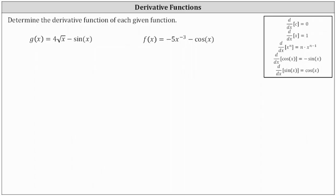To begin, we need to write the square root of x using a rational exponent. For a square root, the index is 2 and the exponent on x is 1. So the square root of x is equal to x to the 1 half, and g of x is equal to 4x to the power of 1 half minus sine x.